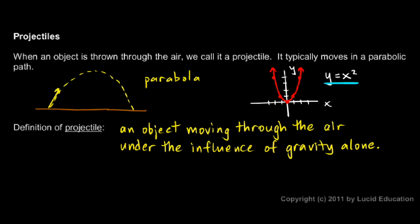So ignoring air resistance and considering gravity to be the only significant force is reasonable. The other thing it means is we're only concerned with the path of the object while it's in free flight — we're not concerned with the throw. It took some force and some time to accelerate the ball up to its initial speed, but the parabolic trajectory applies only when it's in free flight. The moment it's released, it becomes a projectile, and when it hits the ground, we're not concerned with the impact. We're only concerned with the flight right up to the moment of impact. That's how we define projectile: an object moving under the influence of only gravity.